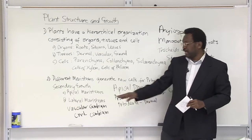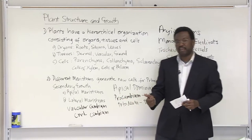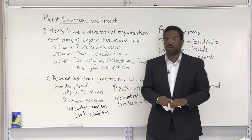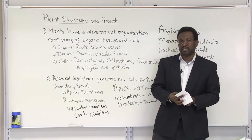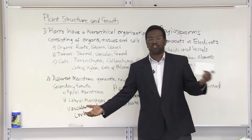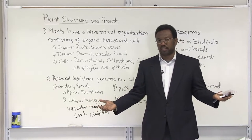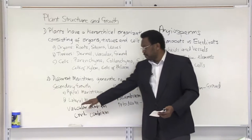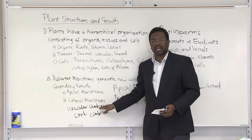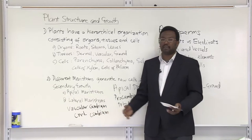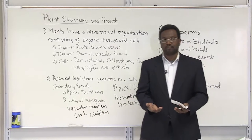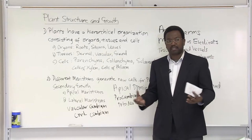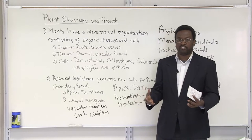The vascular cambium gives rise to secondary xylem and secondary phloem. When you hear xylem and phloem, think water and minerals in xylem, and sugar and other organic nutrients in phloem. Secondary xylem and secondary phloem are developed from the lateral meristem, the vascular cambium. The cork cambium gives rise to cork, which is a ground tissue type that supports the plant when it's undergoing secondary growth.